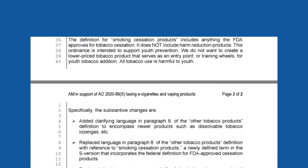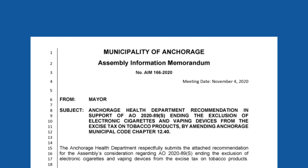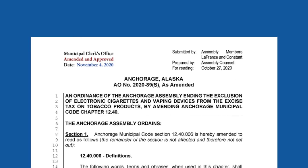This ordinance also has an Assembly Information Memorandum, which reports information requested by the Assembly. In this case, the Anchorage Health Department provided additional findings and recommendations in support of the proposed ordinance. Now looking at the ordinance itself, we see that the proposed ordinance was submitted by two Assembly Members, read at the October 27th meeting, and amended and approved on November 4th.